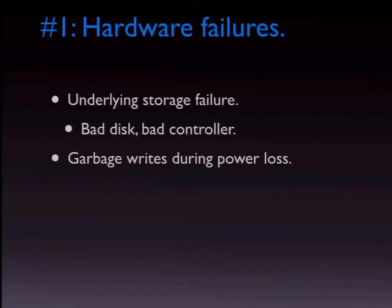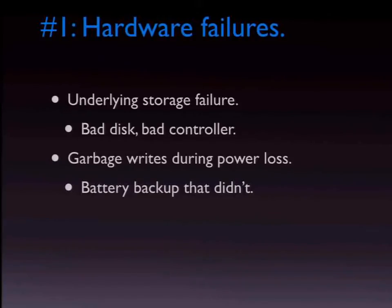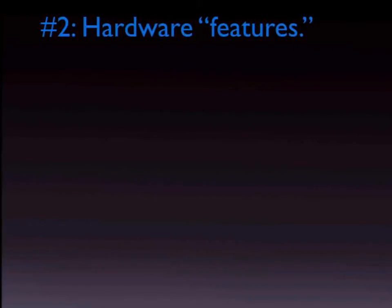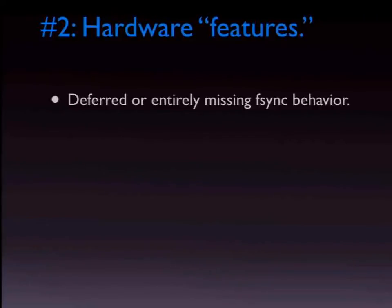Bad controller. Garbage writes during power loss — very common. Battery backup that didn't work: after four years, your battery backup on a RAID controller or SAN is probably not good anymore. Bad RAM — especially non-ECC RAM, which desktop-quality machines often don't have. Hardware features: deferred or entirely missing fsync behavior, because disabling proper fsync behavior very much flatters benchmark results. The argument is 'we have battery backup and all these things' — and if it works end to end, that's great.